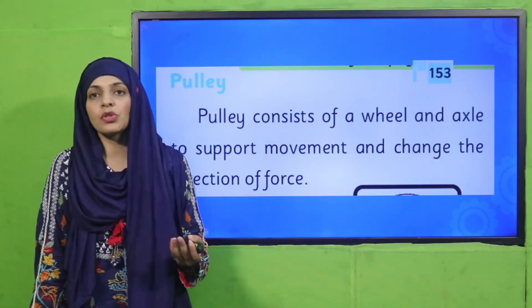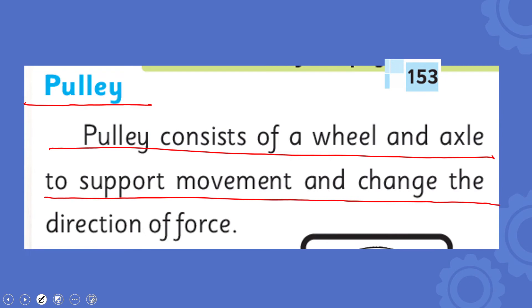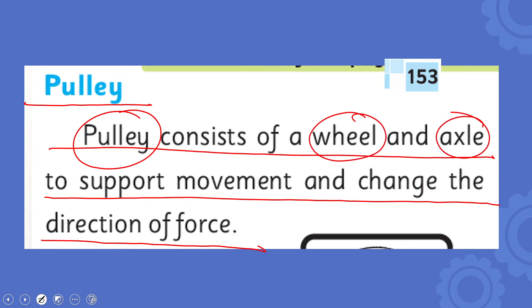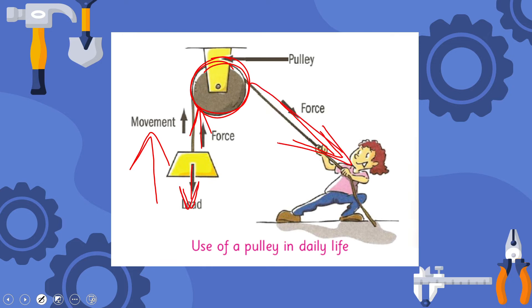Now for another simple machine — the pulley. A pulley consists of a wheel and axle to support movement and change the direction of the force. Basically, a pulley has two things: a wheel and an axle, by which work becomes much easier. You can see that force is applied on one side and the load moves upward. The pulley changes the direction of the force — because load always acts downward due to gravity, but because force is applied here, the direction of force changes to upward, making the work easier.